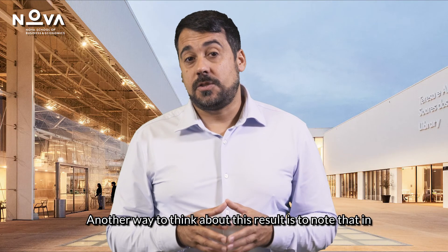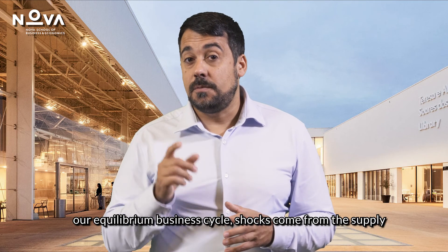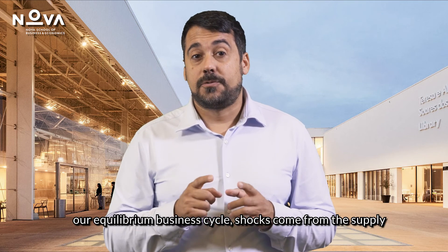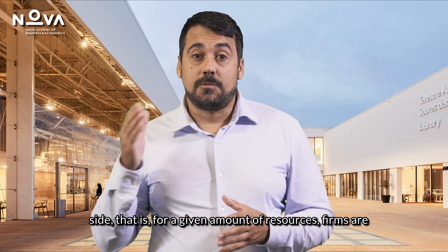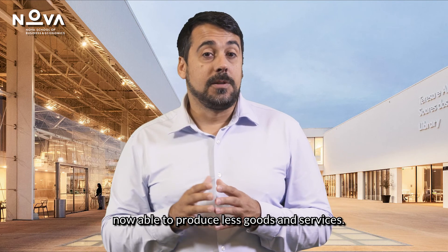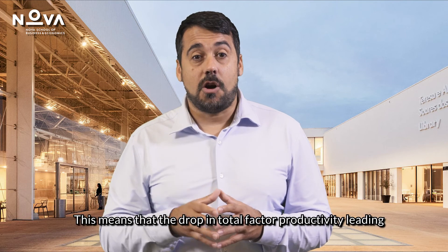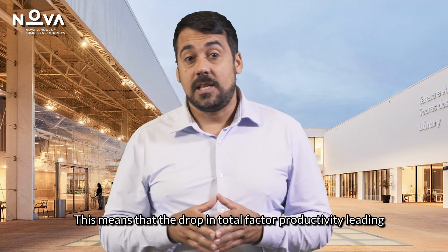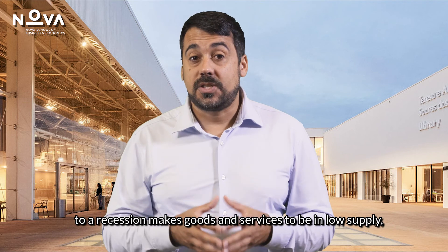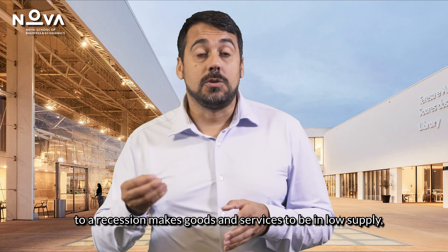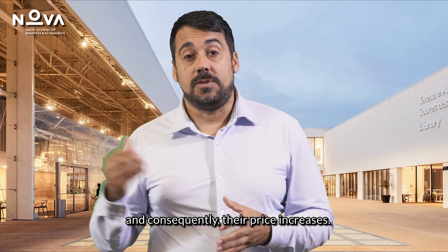Another way to think about this result is to note that in our equilibrium business cycle, shocks come from the supply side. That is, for a given amount of resources, firms are now able to produce less goods and services. This means that a drop in total factor productivity, leading to a recession, makes goods and services to be in low supply, and consequently, their price increases.